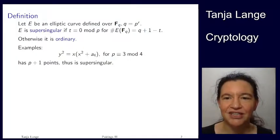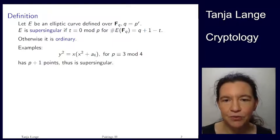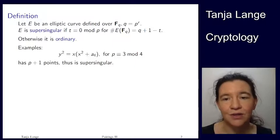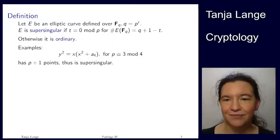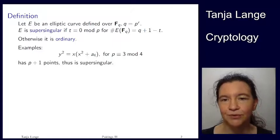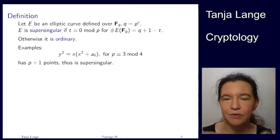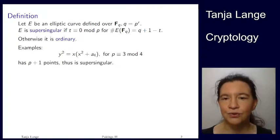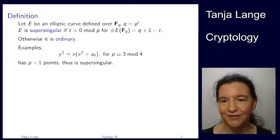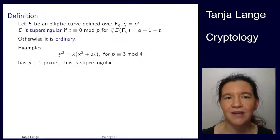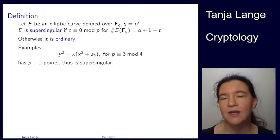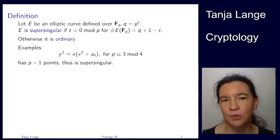All right, so third and last lecture about pairings. Here we're going to look into what elliptic curves have efficiently computable pairings. And then you can choose to either scale up your arguments, like the primes that you're using, in order to have secure pairings. Remember that I have shown you pairings as one of the rows in this table of key sizes. Or you can choose to use this as an attack tool if somebody has not actually scaled up the p sizes and is then using such elliptic curves as if they were normal elliptic curves. And you as an attacker notice that you have such a tool at hand.